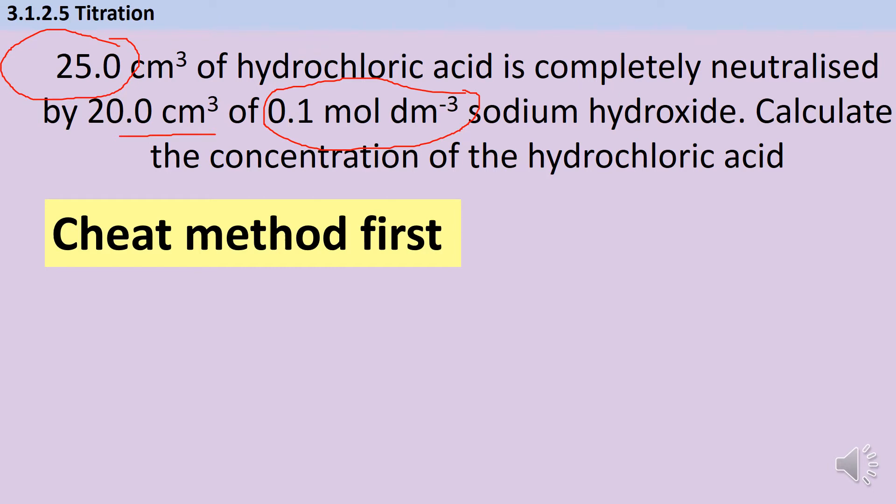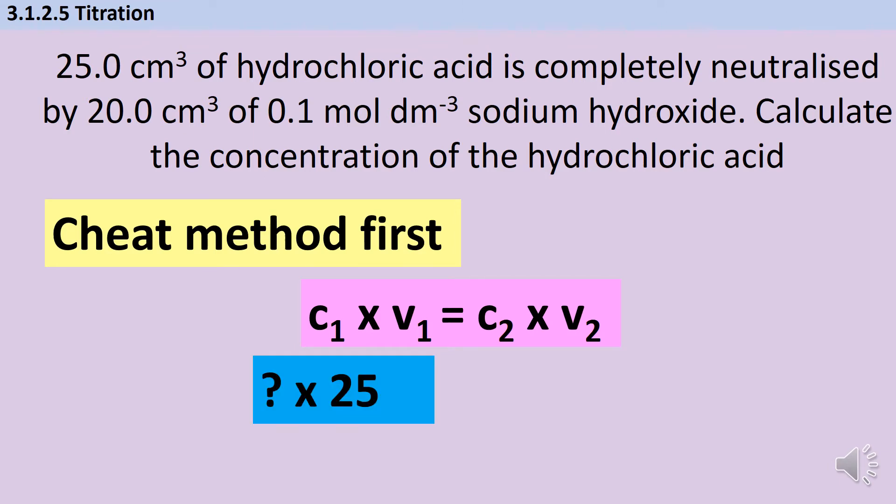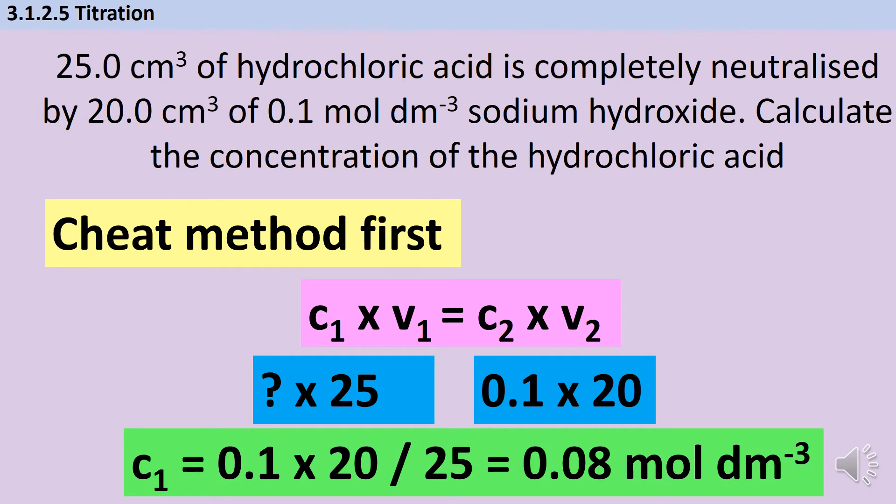So the cheat's method is this: concentration one times volume one equals concentration two times volume two. The one and the two correspond to the two different chemicals—it doesn't really matter which one is which. So in this instance, if I make my hydrochloric acid my chemical one, then I've got an unknown concentration of hydrochloric acid times 25, and I've got a concentration of 0.1 for my sodium hydroxide times 20. So if I do a little bit of rearranging, I can work out that my concentration of hydrochloric acid is 0.1 times 20 divided by 25, which is 0.08 mole per dm³.